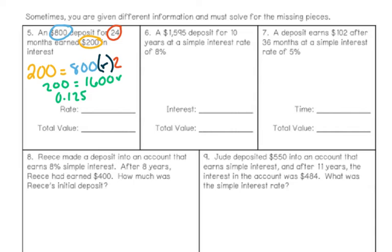On the right side of the equation, I can multiply 800 times 2 and leave the variable R there — 800 times 2 is 1,600. To get R by itself, since it's being multiplied, I divide by 1,600 on both sides, which leaves me with 0.125. Since we typically talk about rate as a percentage, I move the decimal two places to the right to get 12.5%. For the total value, I take the original $800 plus $200 in interest, giving a total value of $1,000.